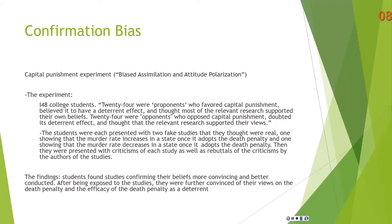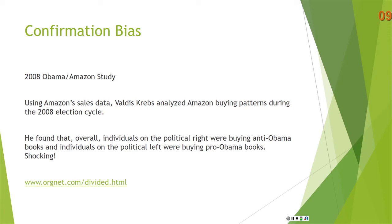There was also a study done in 2008 during the presidential election when Obama was running. Valdez Krebs analyzed Amazon buying patterns during the 2008 election cycle. What he found was that individuals on the political right were buying anti-Obama books, and individuals on the political left were buying pro-Obama books. This is confirmation bias at work. The right, with few exceptions, is not going to read pro-Obama books, and the left is not going to read anti-Obama books. They're going to buy books that confirm what they already believe. I don't want to be too harsh — this is a human tendency, and I know some people actively fight against it.